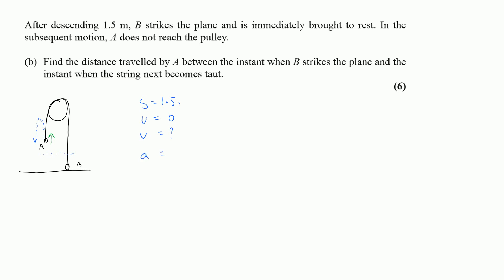From the start, the distance travelled is 1.5 m, initial speed u = 0, and acceleration = g/5 (from part one). Time is not needed, so I use v² = u² + 2as — the only SUVAT equation without time. Substituting: v² = 0 + 2 × (g/5) × (3/2). Writing 1.5 as 3/2 lets the 2s cancel, giving v² = 3g/5, so v = √(3g/5).